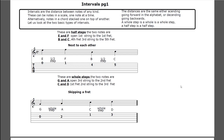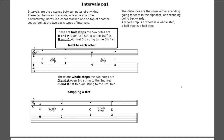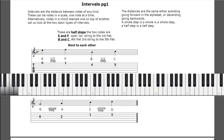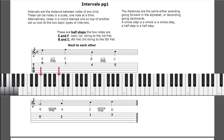Half step is a half step - the meter is in the direction. There are half steps: the two notes are E and F, open first string to the first fret, and B and C, fourth fret third string to the fifth fret. On a piano, the E and F and the B and C keys don't have a black key in between them - they're natural half steps.